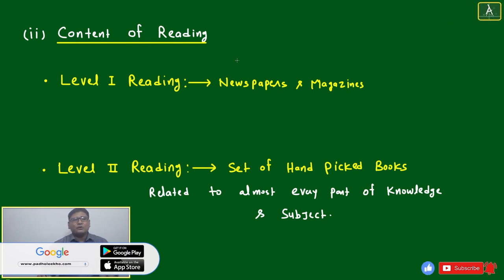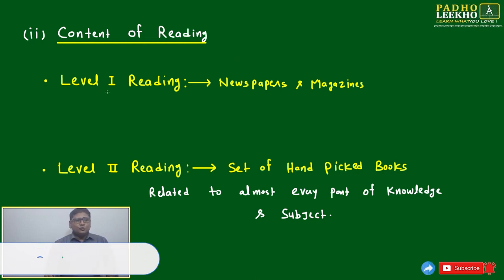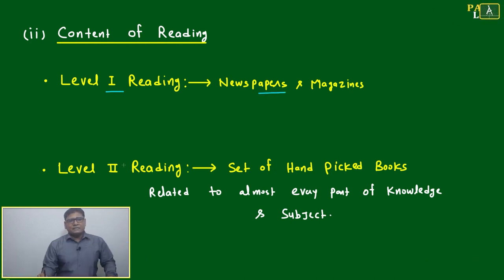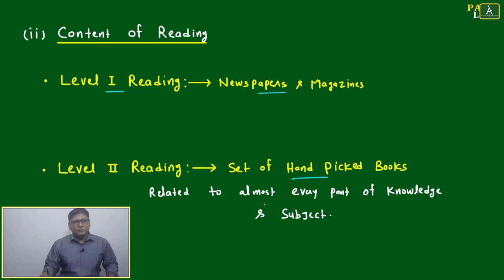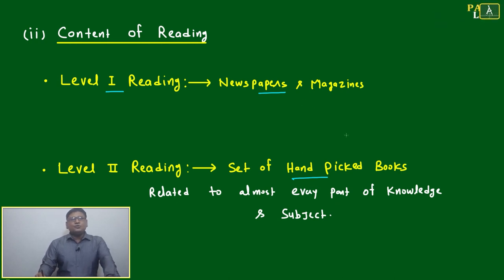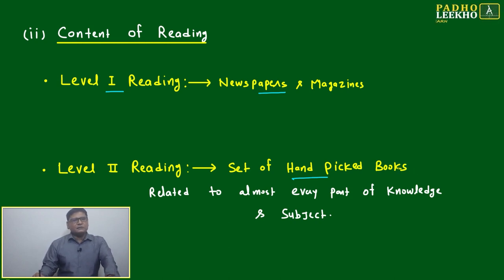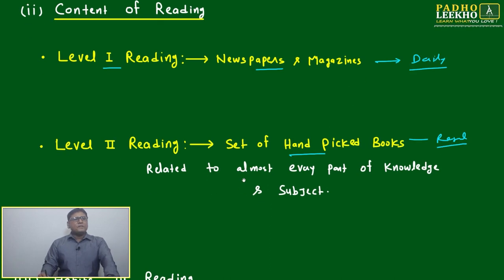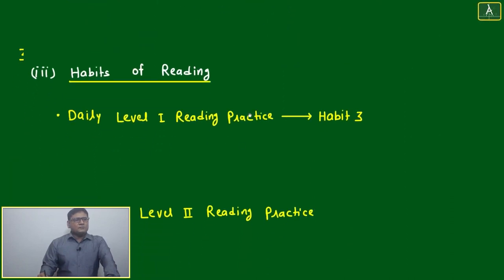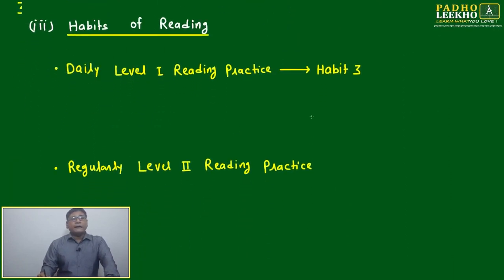I have divided reading into two levels. Level one reading is newspaper and magazine — on a daily basis. Level two reading is a set of hand-picked books I recommend, covering almost every part of knowledge and subject. If you maintain daily practice that is great, but at least every one or two days in a week is sufficient. Level one is your daily habit; level two is your regular practice — these two parts we have to include in your content of reading.